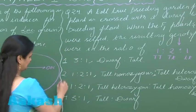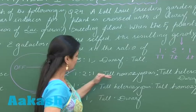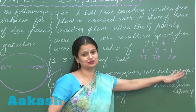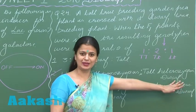So now we can look for the right option: that is 1:2:1—tall homozygous, tall heterozygous, and dwarf condition. So now we can move on to question number 25.